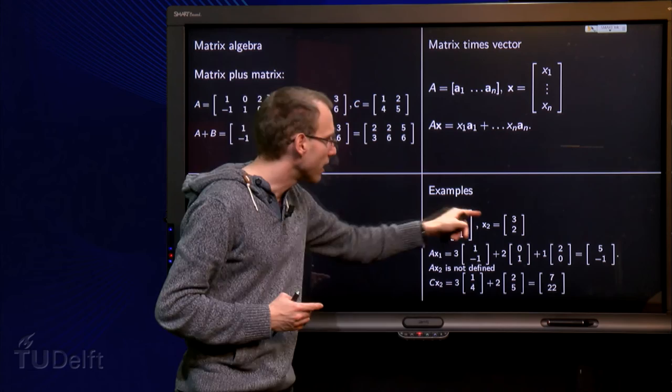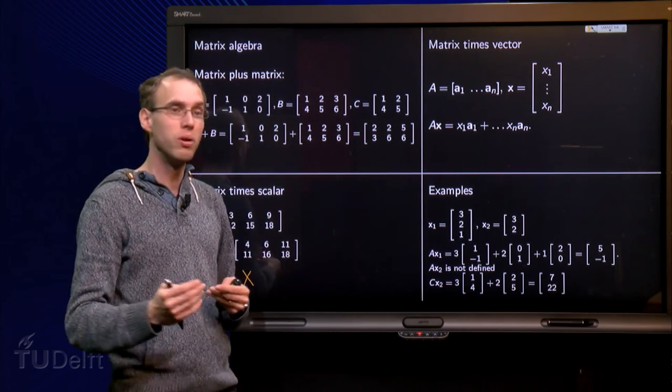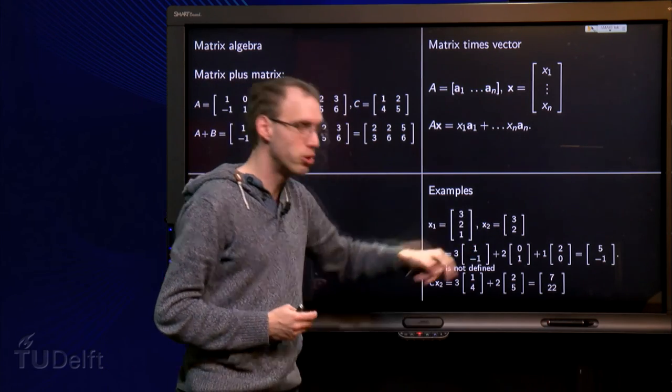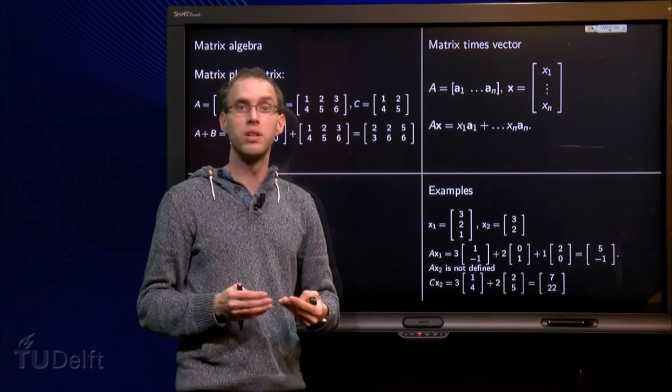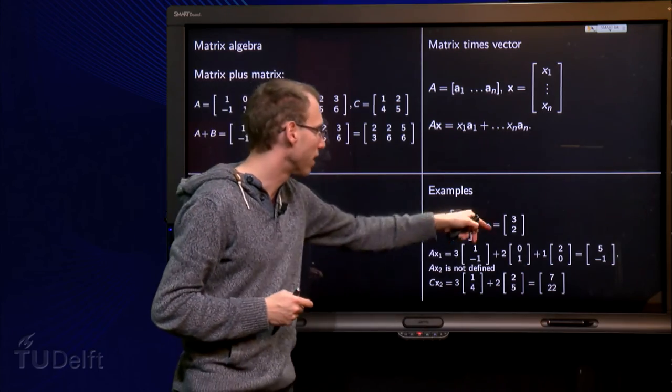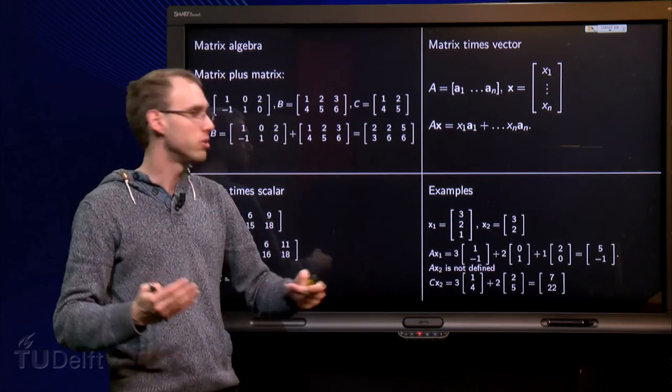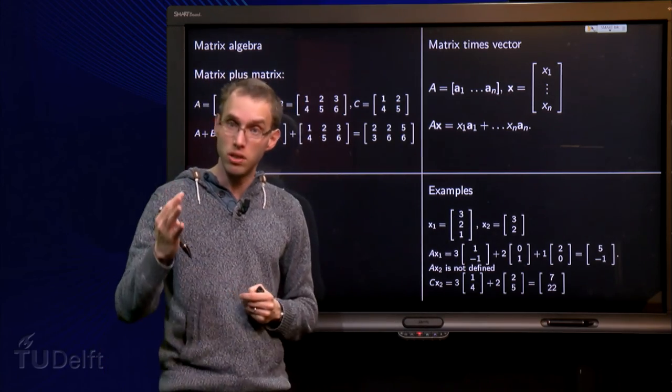Now we can also try to compute A times X2. However, X2 has only 2 components, and A has 3 columns, so we would need 3 components in the vector. We have only 2, so A times X2 is not defined.